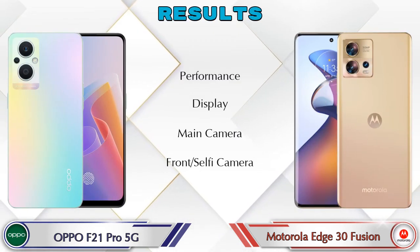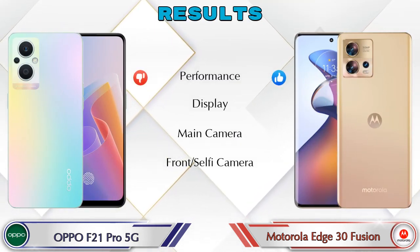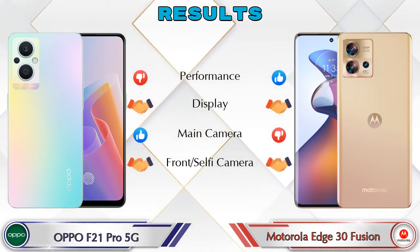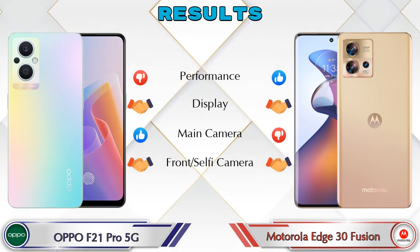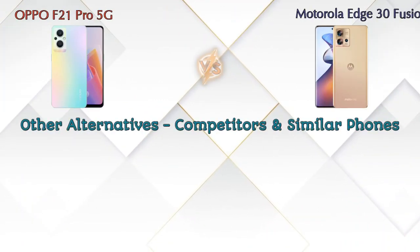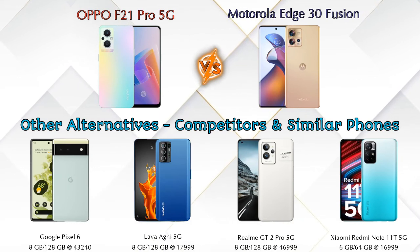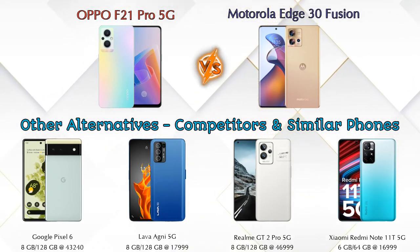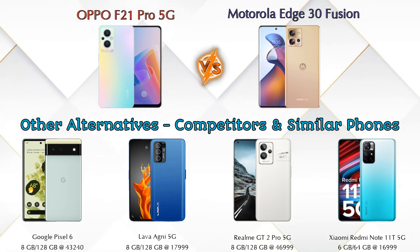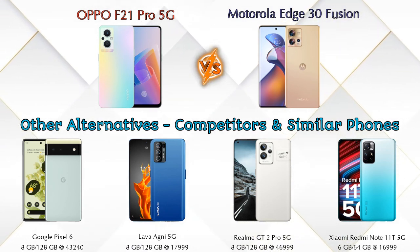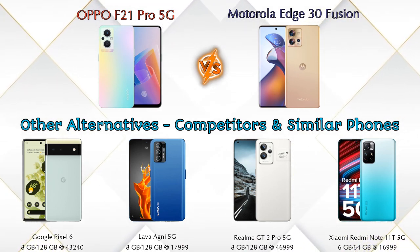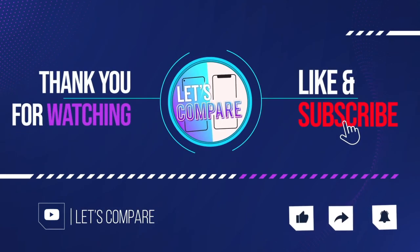Finally, talking about results: in performance, the 30 Fusion 5G is ahead; in display, both phones are the same; in main camera, the F21 Pro 5G is ahead; in front selfie camera, both phones are the same. For other competitors at the same price, consider the Google Pixel 6 5G, Lava Agni 5G, Realme GT2 Pro 5G, and Xiaomi Redmi Note 11T 5G — details about all these phones are available in the description. If you liked the video, please like and subscribe. Thanks for watching!